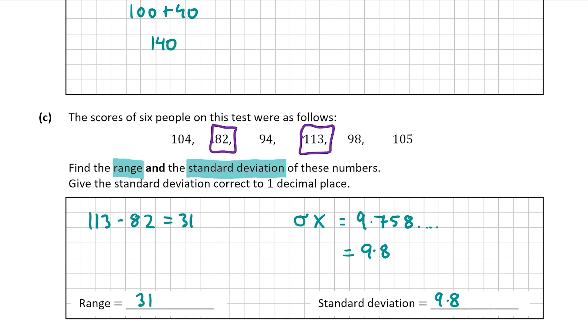So the range of the six people who took the test was 31 and their standard deviation was 9.8. Part C was worth five marks — that's the final part of this question. Thank you very much for watching and I hope this helped.